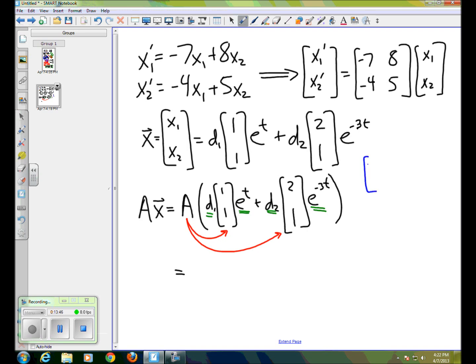So we've got negative 7, 8, negative 4, 5 times 1, 1 equals, so when we multiply the first row of the matrix, when we dot it with the vector, we get 1, and same thing when we do the second row. So we get 1, 1, and if we take negative 7, 8, negative 4, 5, and we multiply it by the vector 2, 1, we get the vector, looks like negative 14 plus 8, so negative 6, and then negative 8 plus 5, so negative 3.